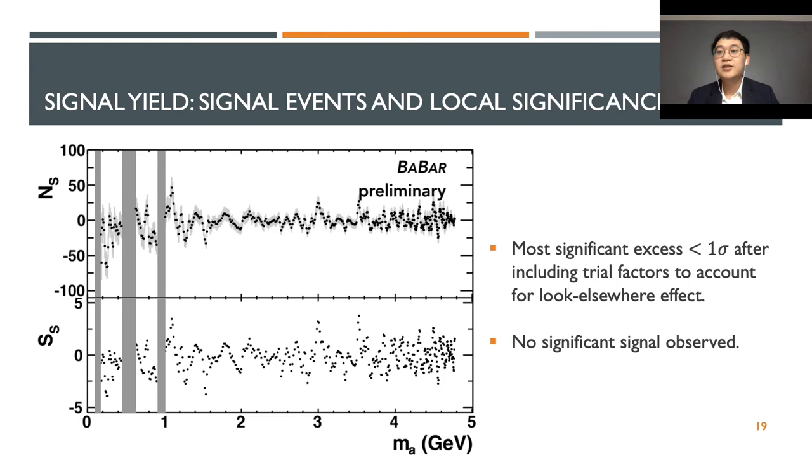Here we see the result of all our fits after the selection cut and extraction. On the top is the number of signal events and on the bottom is the signal significance. We can see some high local significance close to 1 GeV, 3 GeV, and 3.55 GeV. However, when we include the trial factor to account for the look-elsewhere effect, the most significant excess drops to below 1 sigma. So we do not observe any significant signal.